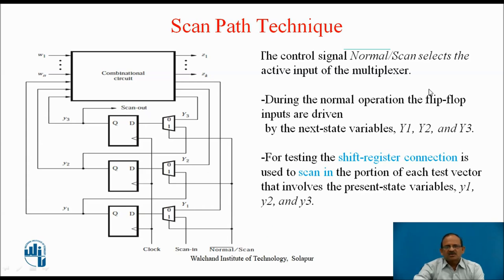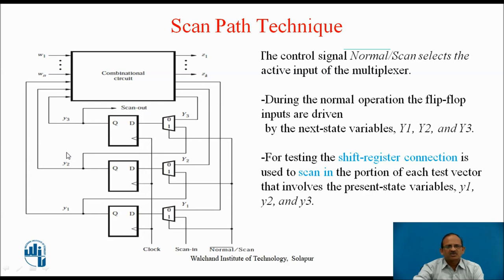The control signal — Normal/Scan — selects the active input to the multiplexer. In normal operation, the inputs to these flip-flops are the state variables as-is. In case of the scan operation, the multiplexers configure the circuit as a shift register, and the external input is shifted into these flip-flops. During normal operation, the flip-flop inputs are driven by the next state variables y1, y2, y3. For shift testing, the shift register connections are used to scan in the portion of each test vector that involves the present state variables y1, y2, y3.